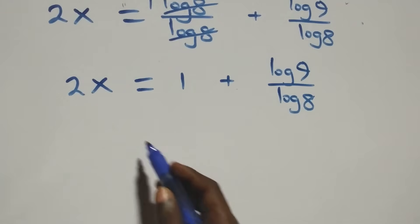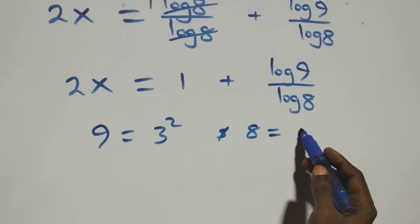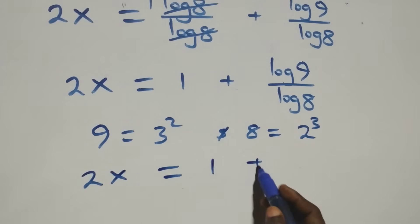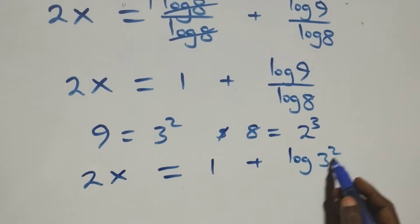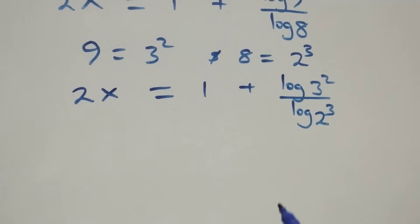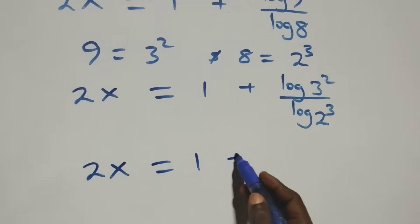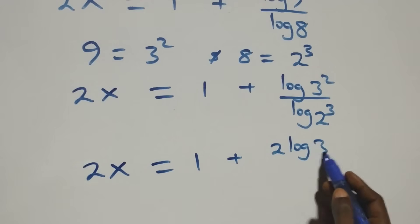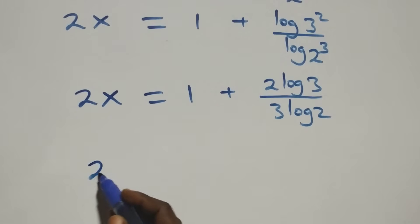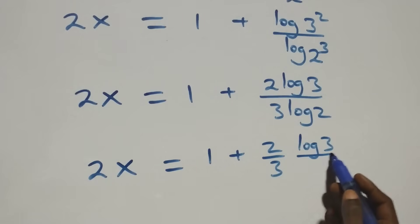We express 9 as 3 squared and 8 as 2 cubed. This gives 2x equals 1 plus log(3 squared) over log(2 cubed). Applying the power rule, we get 2x equals 1 plus 2 log 3 over 3 log 2, which we can also write as 2x equals 1 plus two-thirds times log 3 over log 2.